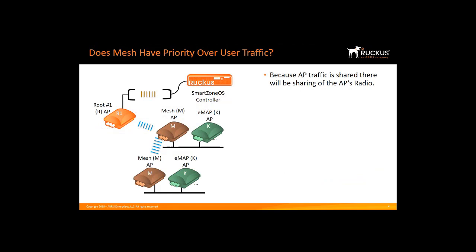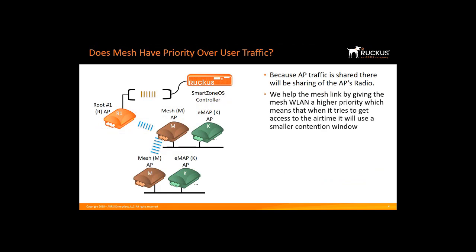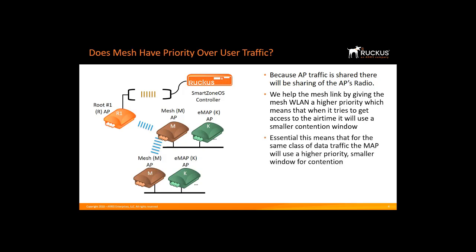Does mesh have priority over user traffic? We help the mesh link by giving the mesh WLAN a higher priority, which means that when it tries to get access to the airtime it will use a smaller contention window. Essentially, the mesh AP will use a higher priority and smaller contention window, so mesh APs will have a higher priority for data or voice packets.